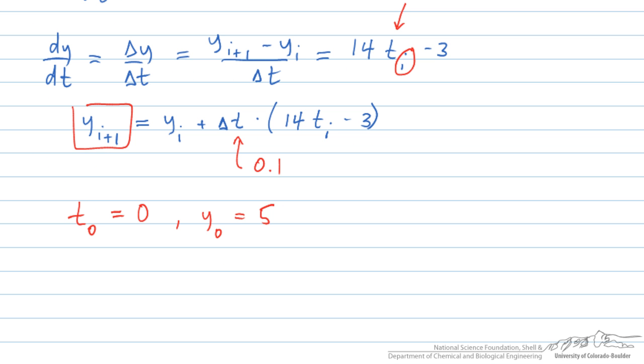We have been given an initial condition, so at time zero our function value is equal to 5. And if I write the first time step, y1 is equal to y0—y0 we know because that is 5—plus our time step times 14 times our initial time, which is zero, minus 3.